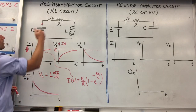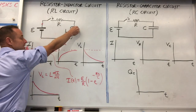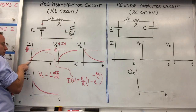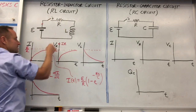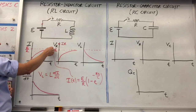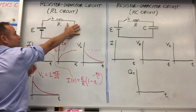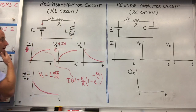The key point for a resistor-inductor circuit: in the short term the inductor acts like a break, so there's no current initially. In the long term it acts like a wire, so you get maximum current — just what you'd expect from Ohm's Law with a single resistor.